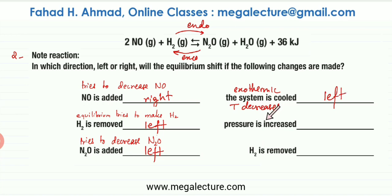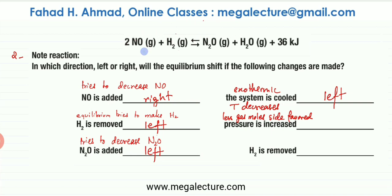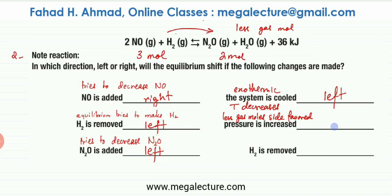The next part is increasing pressure. Le Chatelier's principle states that when you increase pressure, the less gas mole side is favored. On the reactant side, there are two NOs and one H2 — three moles of gas. On the product side, there is one N2O and one H2O — two moles of gas. So pressure is increased, the less gas mole side — the right-hand side — is favored, and the equilibrium shifts to the right.